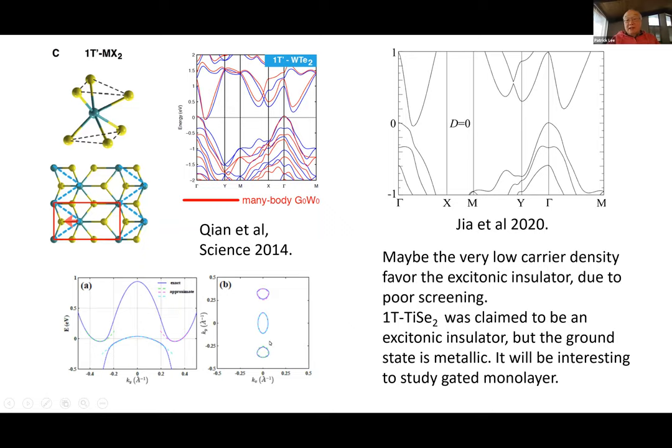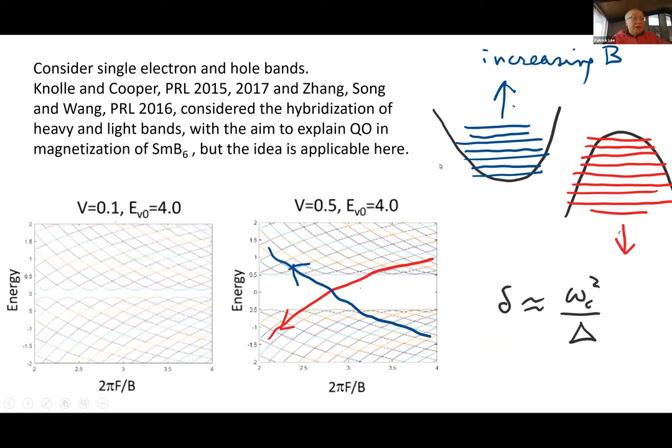Now if that's true, I think it's actually a very exciting system because as far as I know, this may be the first demonstration of this. I may be wrong—there are experts out there, please correct me. For example, 1T titanium selenide in the bulk was claimed to be an exciton insulator but eventually the ground state is metallic. I think it would be very interesting to study gated monolayers. Once you accept it as an excitonic insulator, I can just borrow what was done before and you get quantum oscillations of the gap.